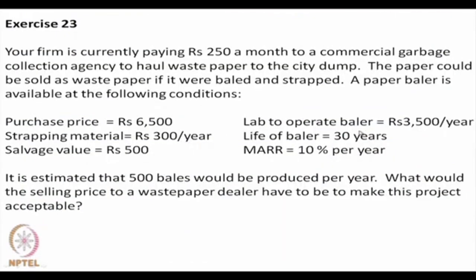Now we take another problem. Your firm is currently paying rupees 250 a month to a commercial garbage collection agency to haul waste paper to the city dump. So basically waste papers are dumped into a particular place and an agency has been deployed to carry the waste paper to that place by paying rupees 250 a month. Now there is an alternative — the paper could be sold as waste paper if it were bailed and strapped. If it is properly bailed and strapped, then they can be sold at a price.